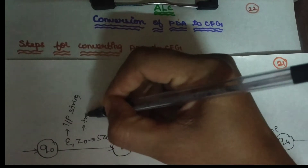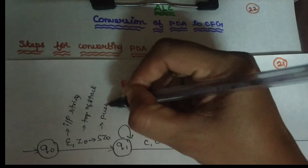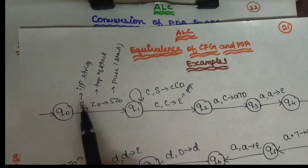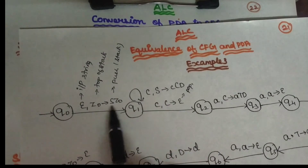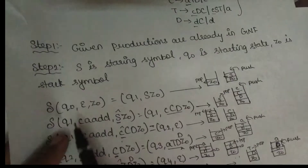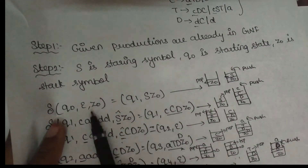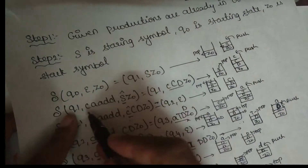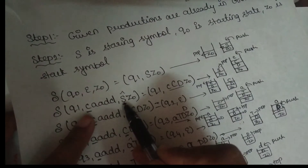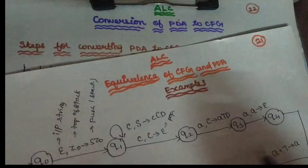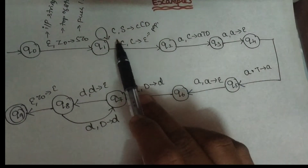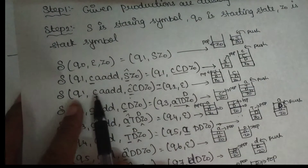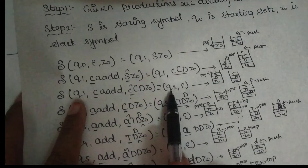You can see the transition table: input string, top of the stack, stack push symbols. Epsilon is the stack pop. Q0 is in this state — epsilon (null string) is not read, top of the stack is Z0, and Z0 is pushed — so Q1 is the next state. Q0 transitions to Q1. This is the condition: if you put a new input symbol or replace a stack symbol. In state Q1, if the input symbol is C, replace with C, C, D and push — Q1 remains.